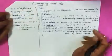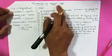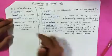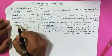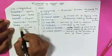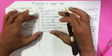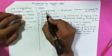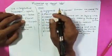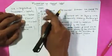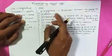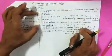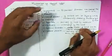So let me repeat it quickly. In mechanism of normal labor: the lie is longitudinal, presentation is cephalic, presenting part is vertex, attitude is flexion, denominator is occiput, position is LOA. There are eight steps, mainly, including descent — there are also nine steps. First start with engagement. In multiparous women, descent starts right after engagement and it occurs throughout the process. Whereas in primigravida, descent occurs only after the first stage.